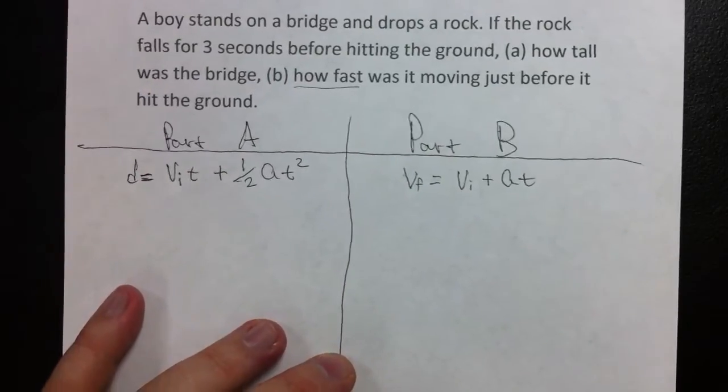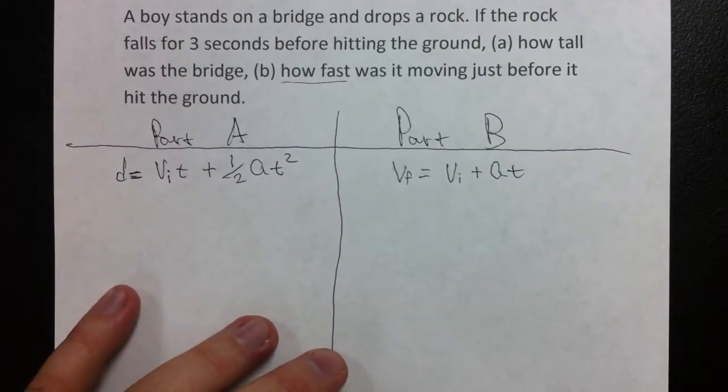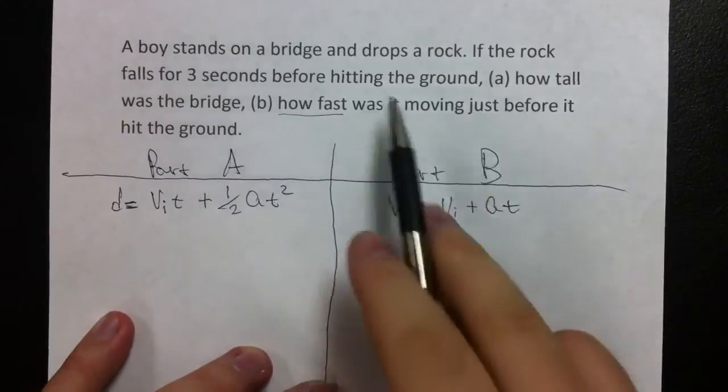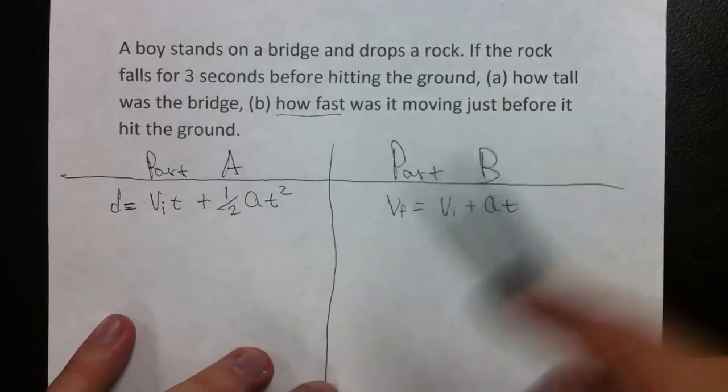Part A states: a boy stands on a bridge and drops a rock. If the rock falls for three seconds before hitting the ground, how tall was the bridge?